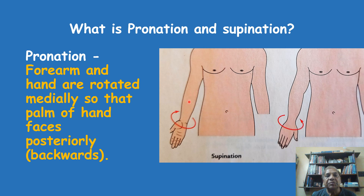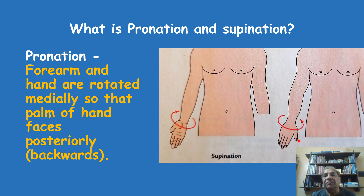In pronation, the forearm and the hand are rotated medially. The thumb, which in anatomical position lies laterally, rotates towards the medial side. As shown in the pronation diagram, the thumb moves from the lateral to the medial position. In this position, the back of the forearm faces anteriorly or in front, and the dorsum of the hand — not the palm but the opposite surface — is facing anteriorly or forward.